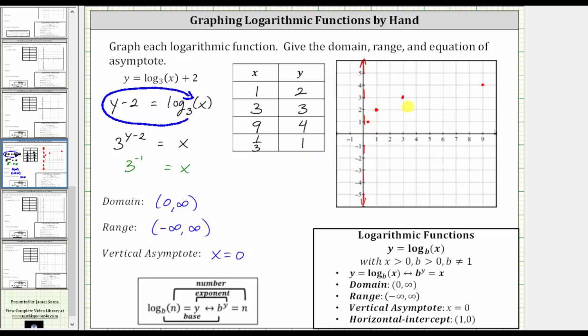So we know the graph passes through these four points and approaches the vertical asymptote, and therefore the graph looks something like this.